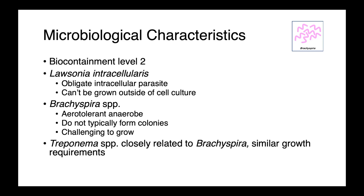Brachyspira species are aerotolerant anaerobes, and while we certainly can grow them in the lab, they're somewhat atypical in that they don't tend to form colonies on solid media. Treponema species are closely related to Brachyspira, have similar growth requirements, and for the veterinary species at least, similar characteristics.